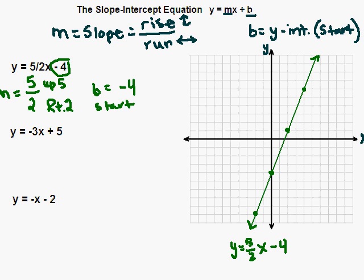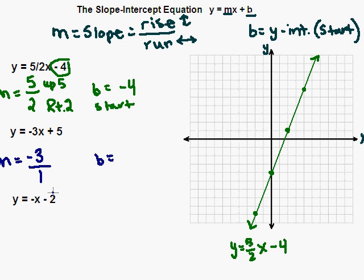Let's look at the next example. We have y equals negative 3x plus 5. Again, let's identify the slope and the y-intercept first. The slope in this case is negative 3. Remember, when you have just a whole number, since slope has to be written as a fraction, we can always put that over 1. So this is negative 3 over 1 for my slope. My y-intercept is this plus 5, so a positive 5 for my y-intercept.